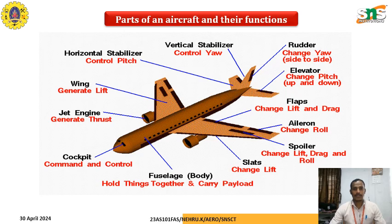The parts of the aircraft and their functions include wing, jet engine, cockpit, fuselage, slat, spoiler, ailerons, flaps, elevators, rudder, and vertical stabilizer. The horizontal stabilizer is used to control the pitch motion, whereas the vertical stabilizer controls the yaw motion.